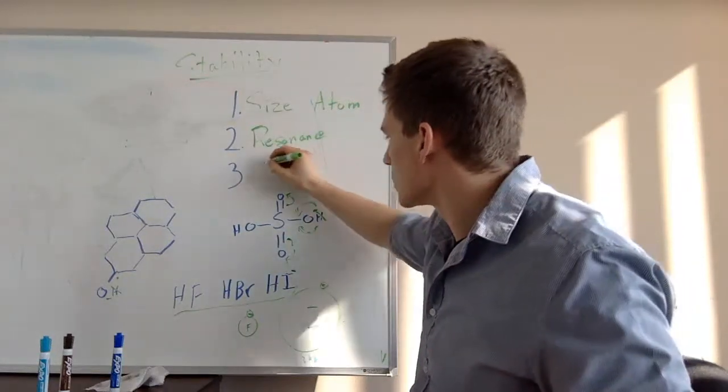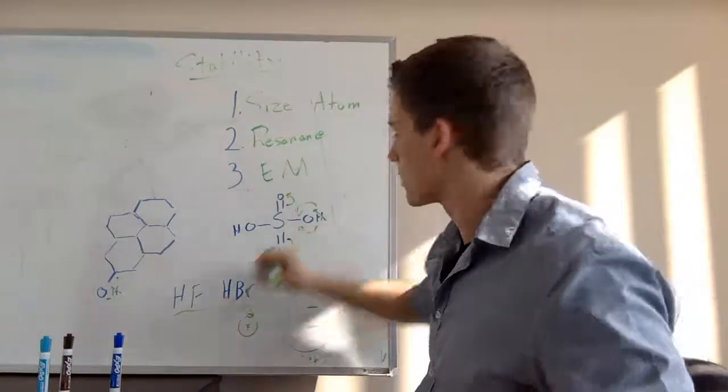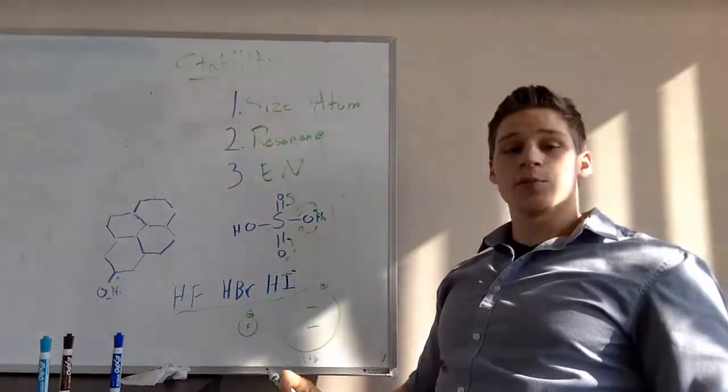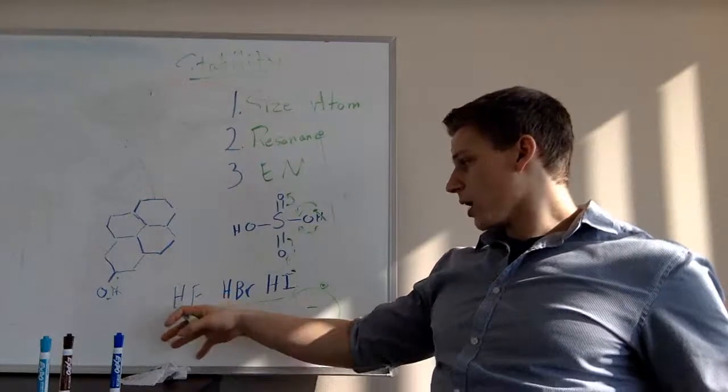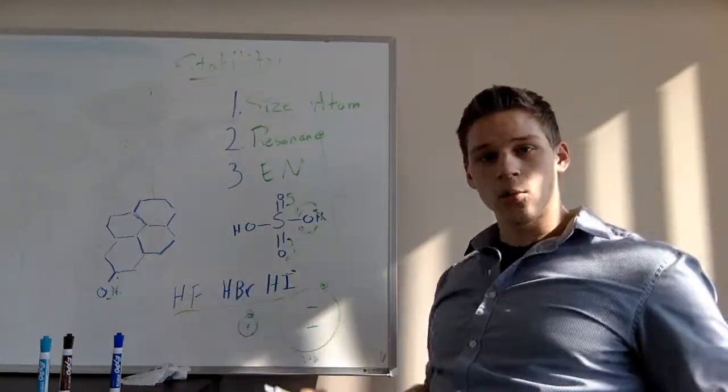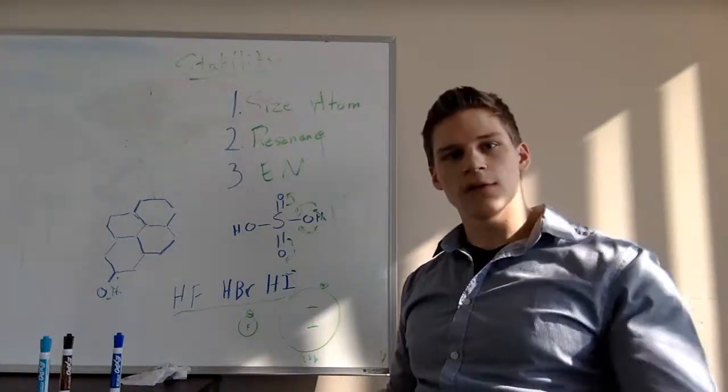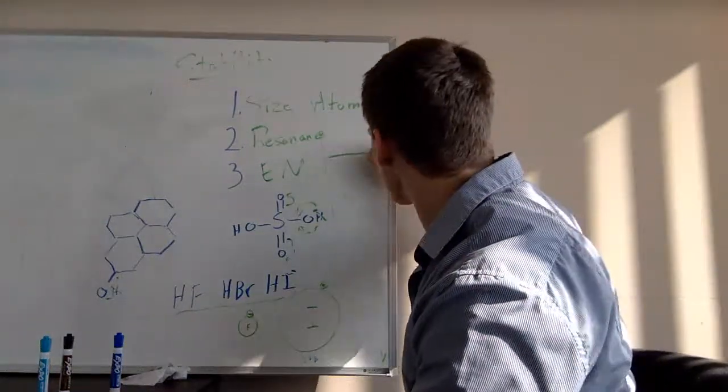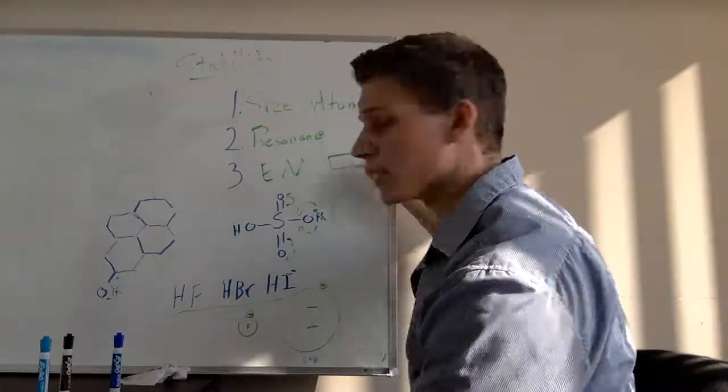Then the last one: we've got size of the atom, resonance, and the last one is electronegativity. Electronegativity is the last most important piece, and this is chronological order. So I want you to think back here. Hydrofluoric acid: what is the pKa of fluorine? You should actually have it memorized by now, and if you don't, I will tell you it is four.